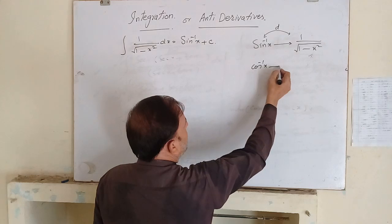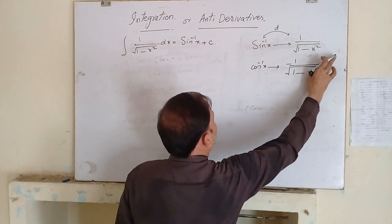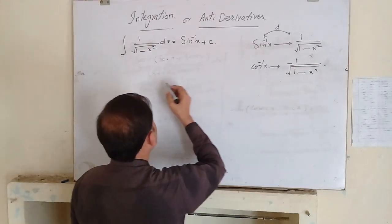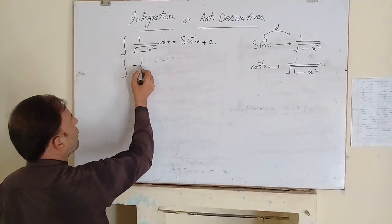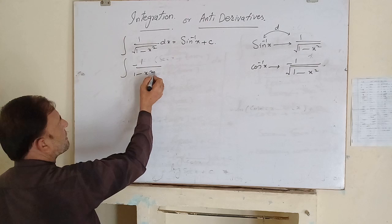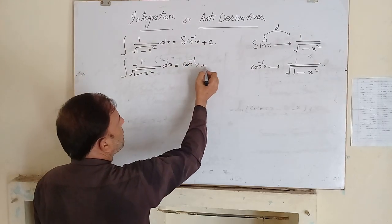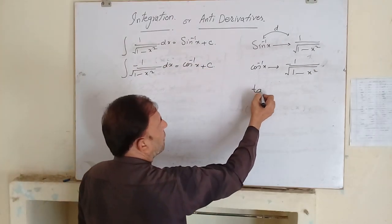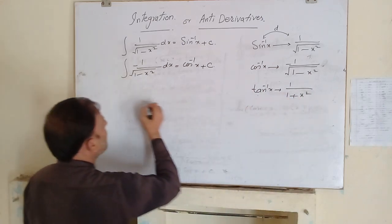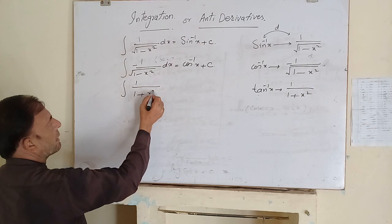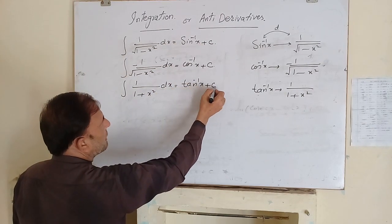The derivative of cos inverse of x is minus 1 over the square root of (1 minus x squared). So the integration of minus 1 over square root of (1 minus x squared) dx is equal to cos inverse of x plus c. The derivative of tan inverse of x is 1 over (1 plus x squared), so the integration of 1 over (1 plus x squared) dx is equal to tan inverse of x plus c.